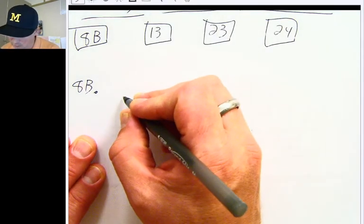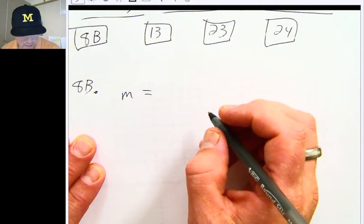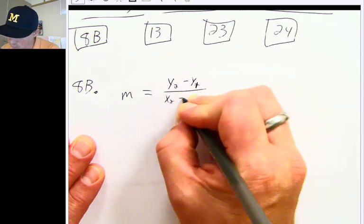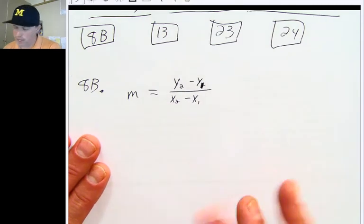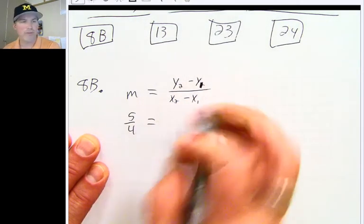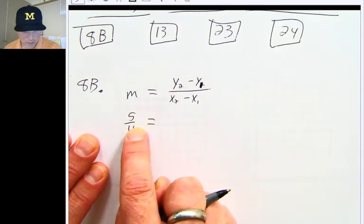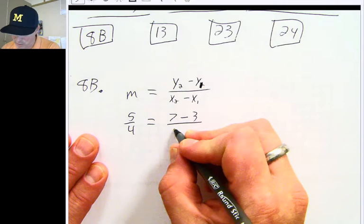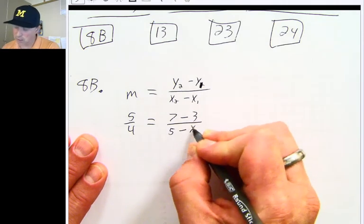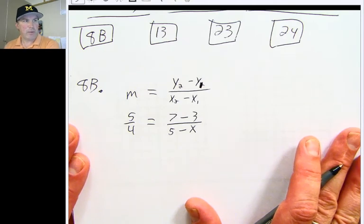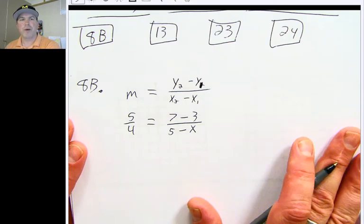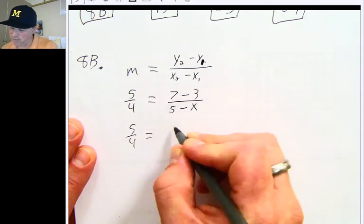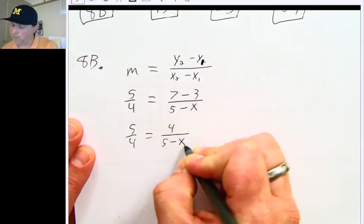I know that the slope, m, is equal to y2 minus y1 over x2 minus x1. And then you just start plugging values in. They tell us that the slope is equal to 5 over 4. Y2, 7 minus y1, which is 3, divided by x2, which is 5 minus my x variable. I would first change this 7 minus 3 to a 4. 5 minus x, there's nothing you can do with that.